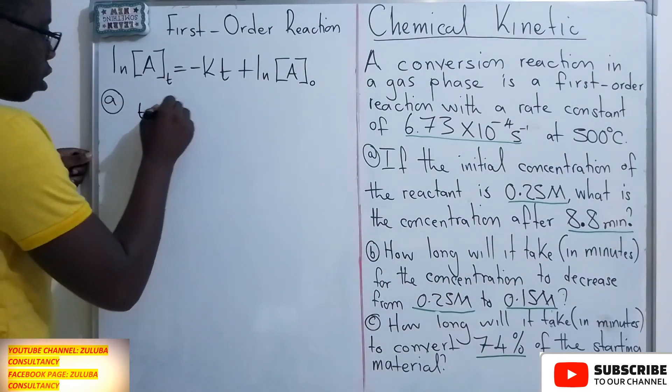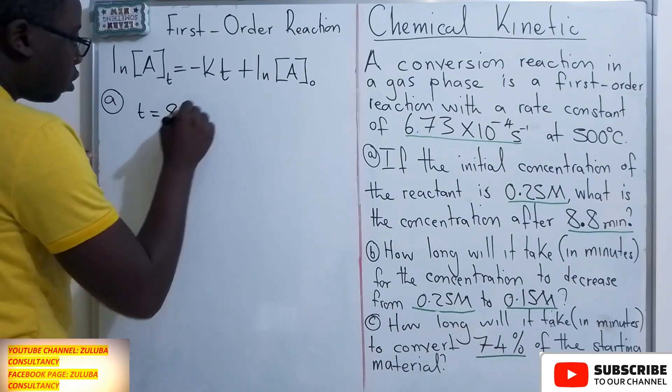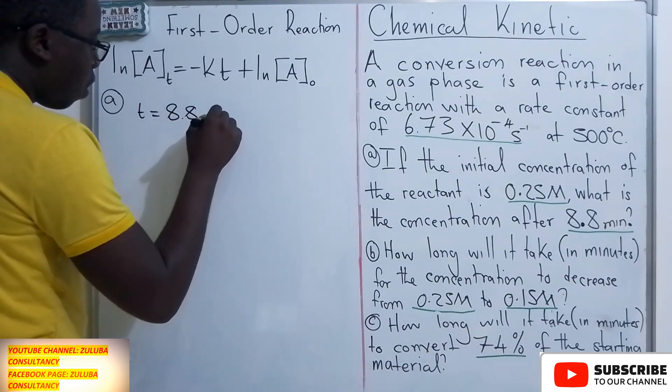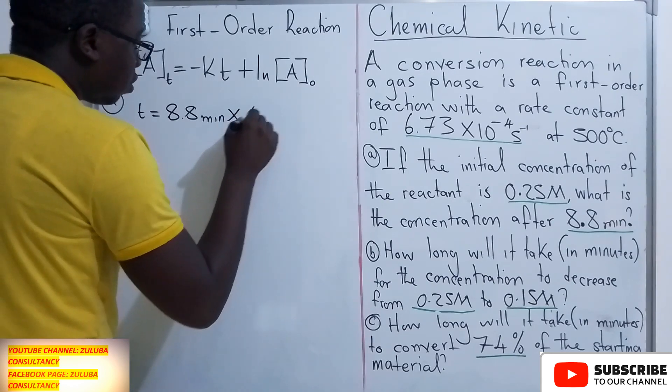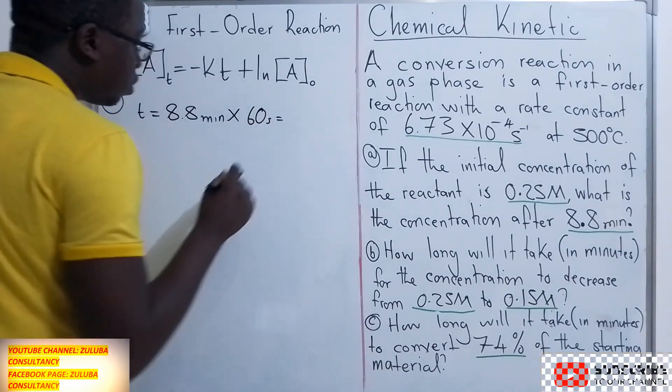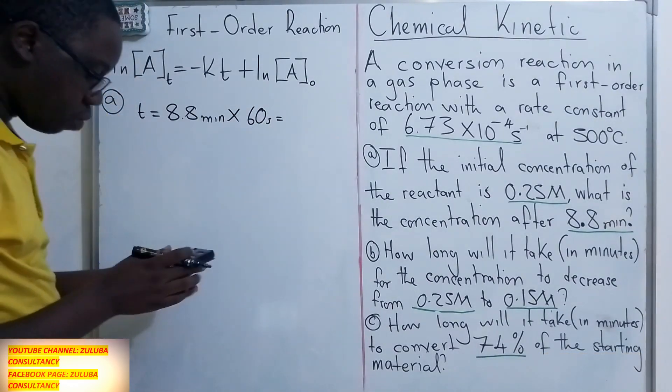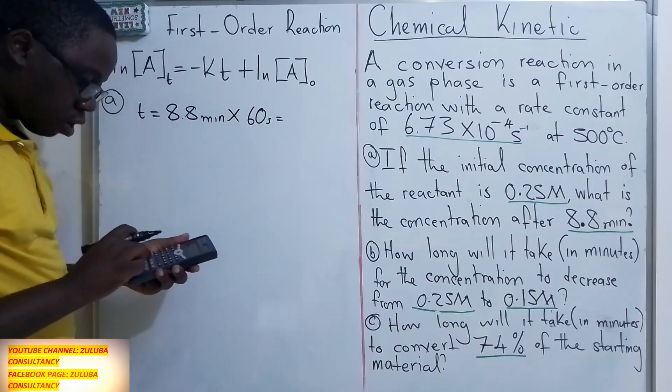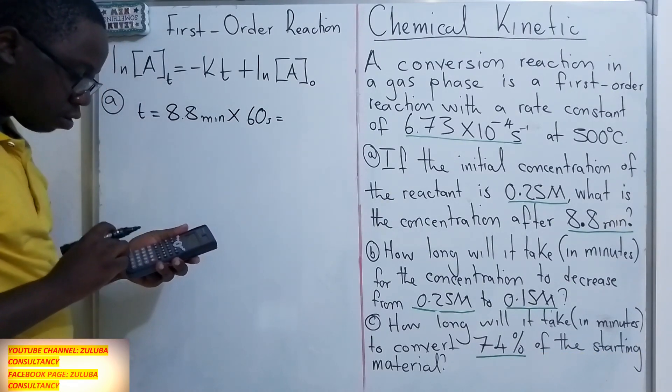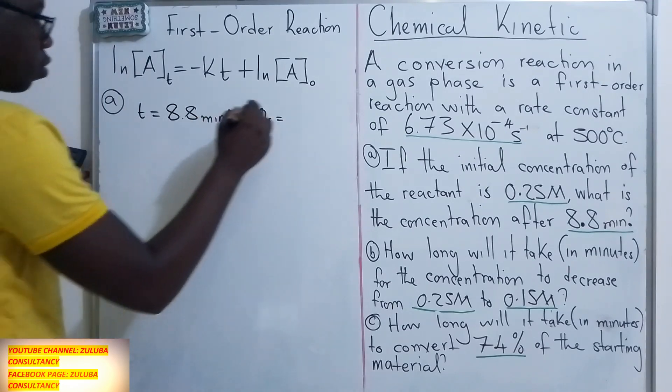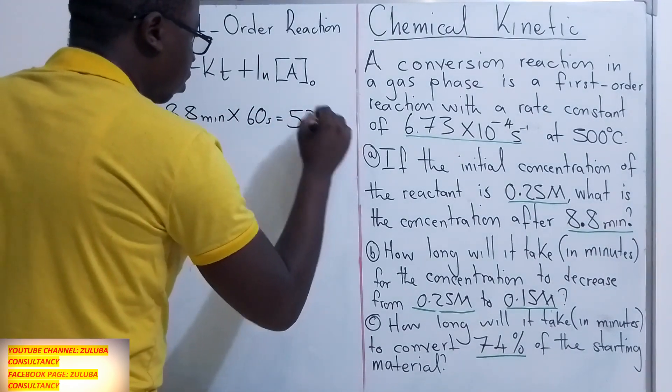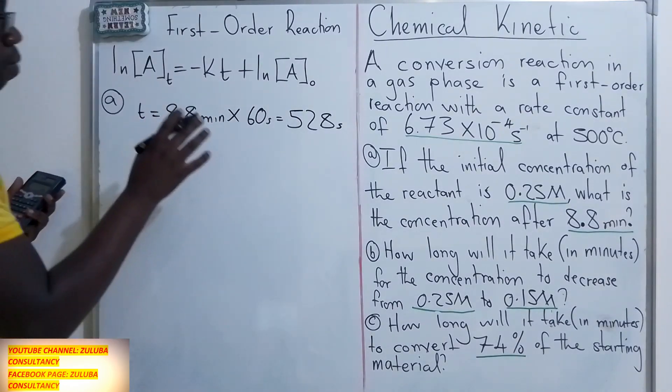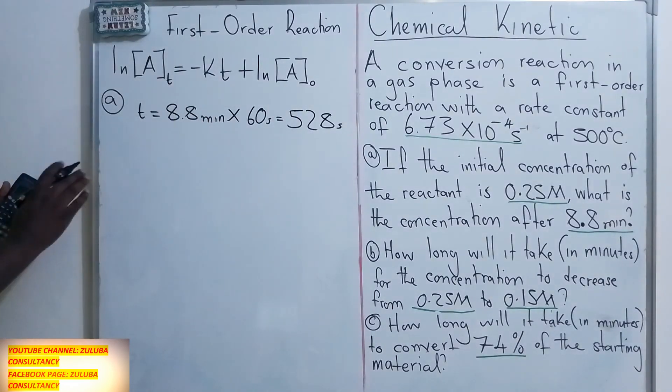So let's start with the time and converting it. We have been given 8.8 minutes. When you multiply this by 60 seconds, it gives us the time that we will be using. So 8.8 multiply by 60 gives us 528 seconds. This is the time that we will use in our equation.